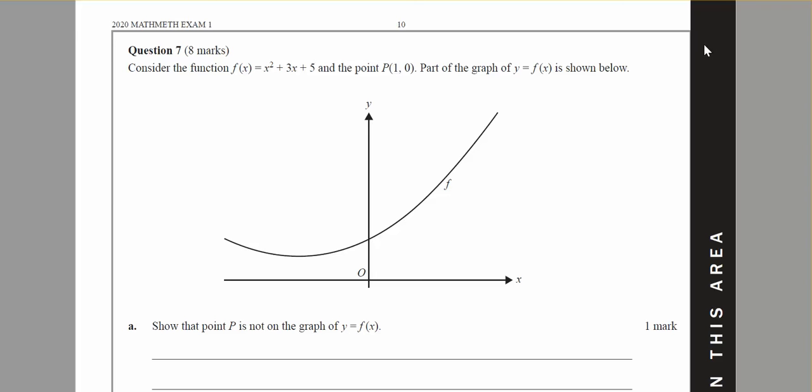Question number 7. I have this parabola and I have point P which is 1, 0. So I'm going to put point P here at 1, 0.